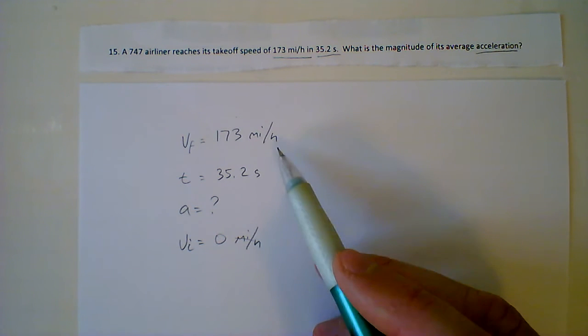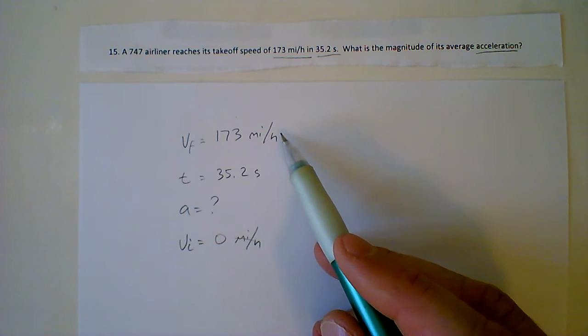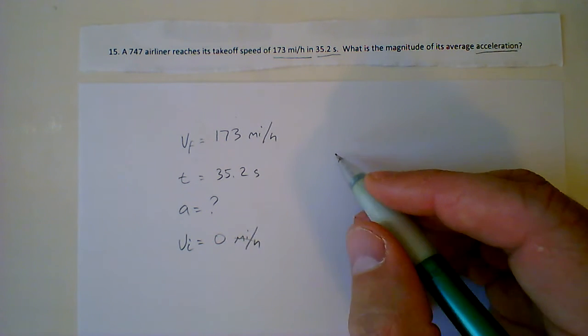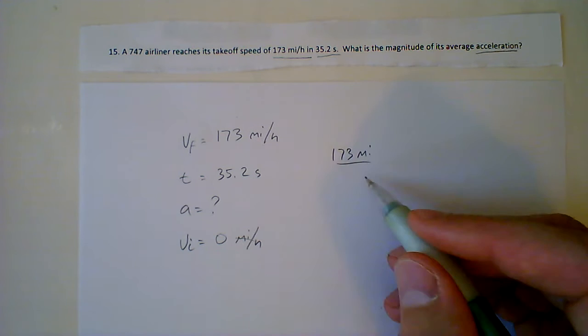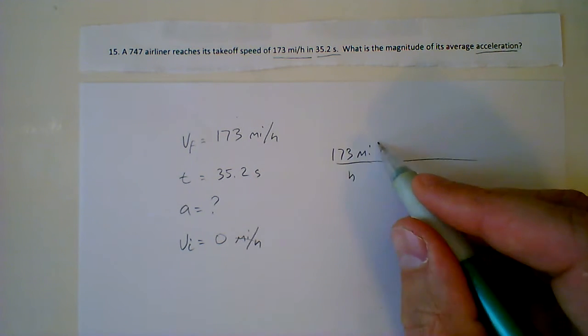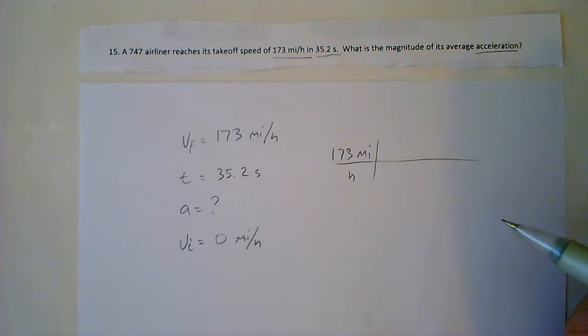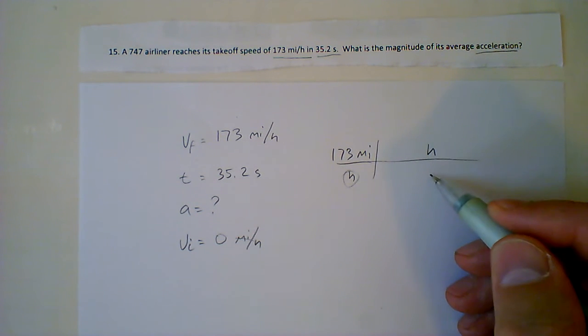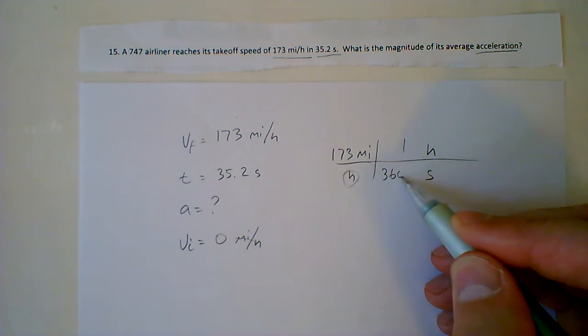I'm going to do a little conversion here. When I look at hours and I look at seconds, these things don't work out. And when I'm deciding what I'm going to convert into, I always go towards SI if that's an option. Here we're going to take 173 miles per hour and we're going to go ahead and convert that. So we're fine with miles. That doesn't conflict with anything else you see here. But we need to get these hours out of there. So we're going to put hours up top and convert that to seconds. One hour is 3600 seconds.